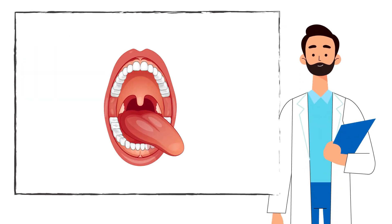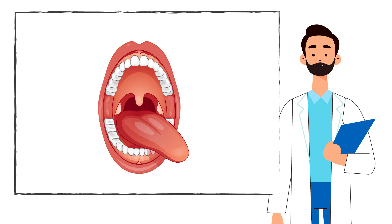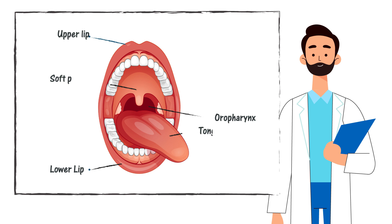We can think of the boundaries of the oral cavity as anterior, which is the front, and that is the lips; posterior, which is the back, and that is the oropharynx, or the throat behind the mouth; and superior, which refers to the upper aspect, and that is the hard palate.